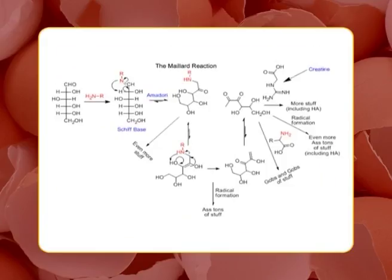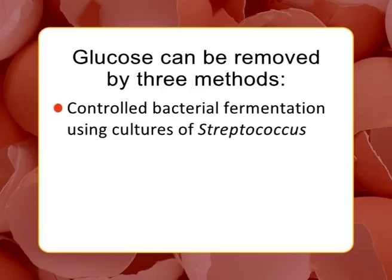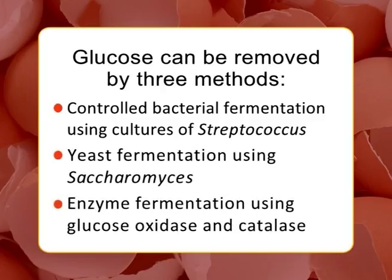After pasteurization, desugaring is performed to remove traces of glucose (~0.5 percent) to prevent browning due to Maillard's reaction. Glucose can be removed by three methods: controlled bacterial fermentation using cultures of Streptococcus, yeast fermentation using Saccharomyces, or enzyme fermentation using glucose oxidase and catalase.